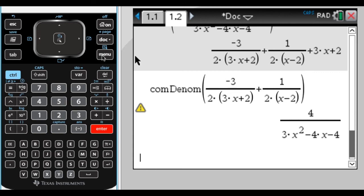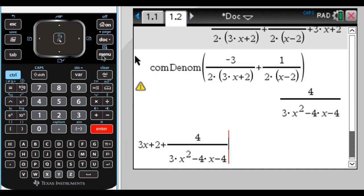And press enter. And there you go. So that's what I would have gotten as my remainder if I had done it by hand. So overall, I would have had 3x plus 2 plus this thing.